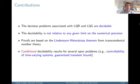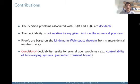The main contributions of our work are the following. The decision problems associated with LQR and LQG are decidable, and the decidability is not relative to any given limit on the numerical precision. The proofs are based on the Lindemann-Weierstrass theorem from transcendental number theory, used to judge zeros of exponential polynomials in the closed-form solutions. We also provide conditional decidability results for several open problems, including controllability of time-varying systems and a guaranteed transient bound for linear autonomous systems.